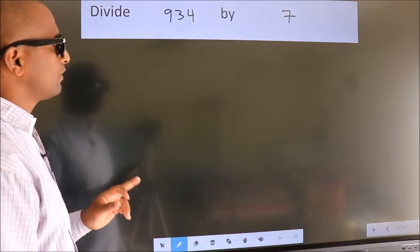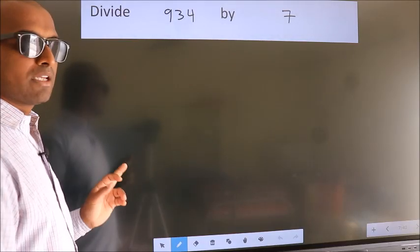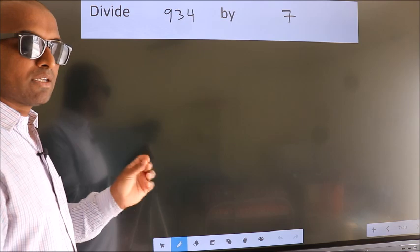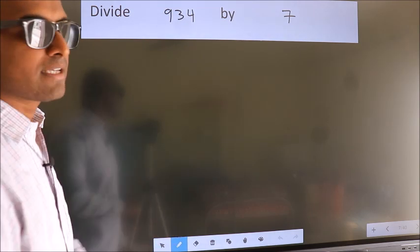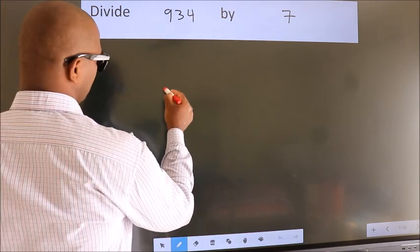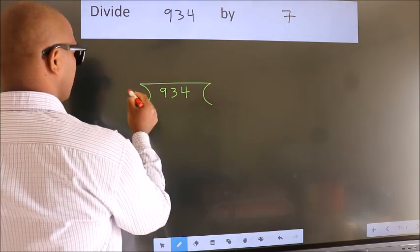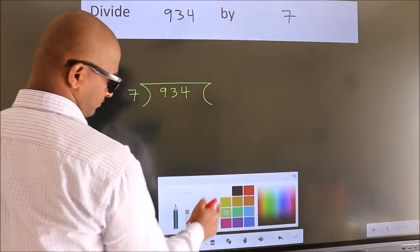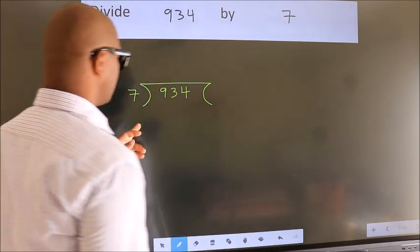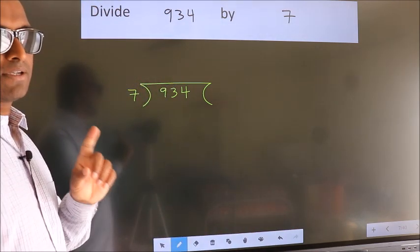Divide 934 by 7. To do this division, we should frame it in this way. 934 here, 7 here. This is your step 1.